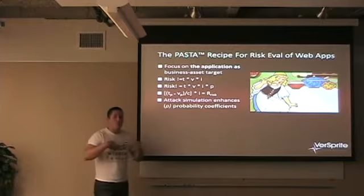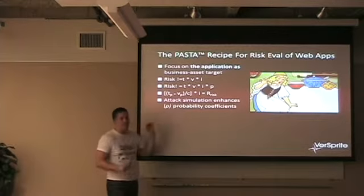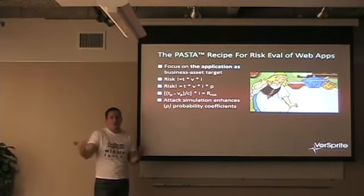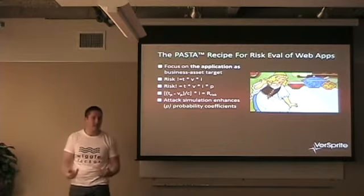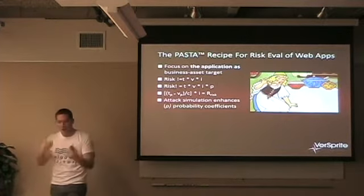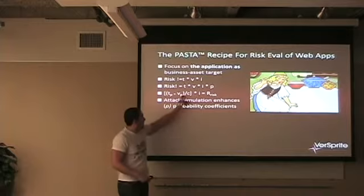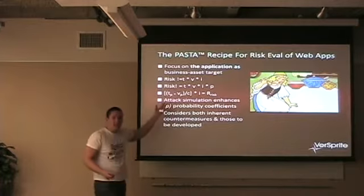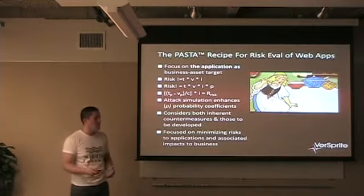When you're as a threat modeler working alongside pen testers and source code analysts, you're substantiating the probability coefficient — P is always a touchy-feely number. The probability is determined based on the effectiveness of testing. We always have someone pushing us to hurry up, versus hackers who have all the time and a team. That elevates the P coefficient. You're considering inherent countermeasures and countermeasures to be developed.